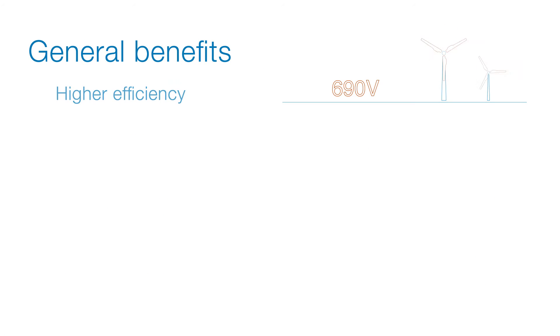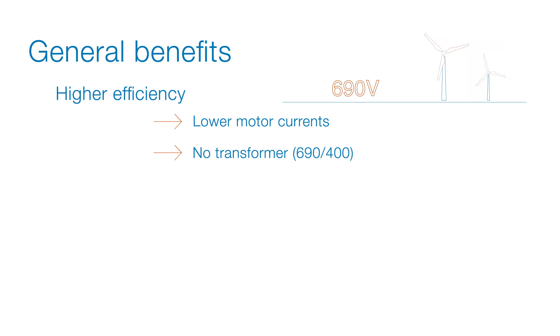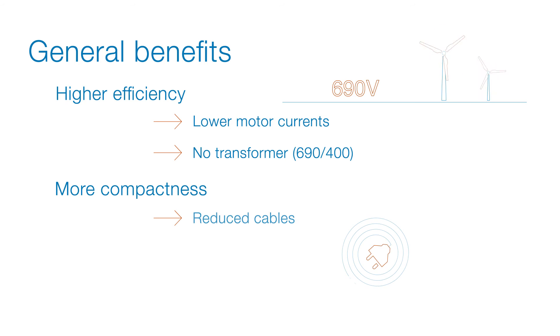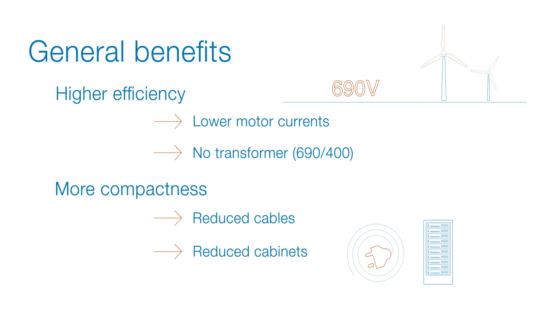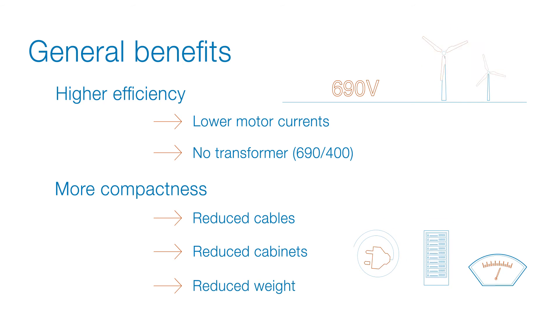General benefits of this approach include higher efficiency, lower motor currents, and no transformer required. Additional advantages are more compactness, reduced cables, reduced cabinets, and reduced weight — all achieved by using 690 volts throughout.